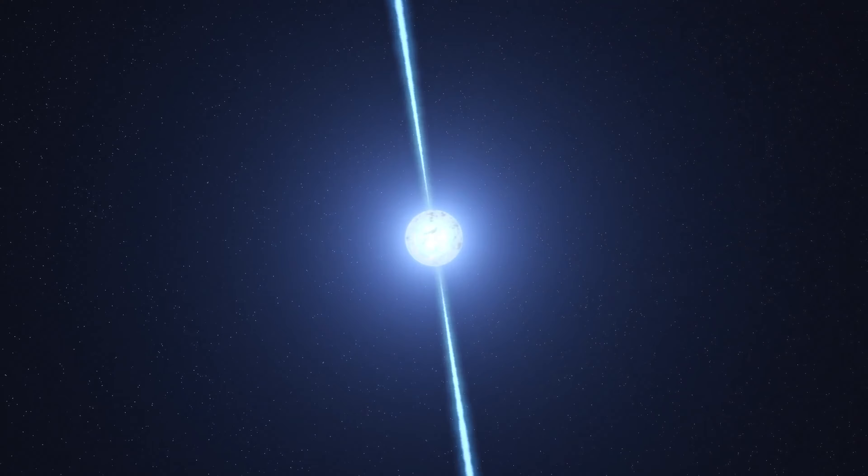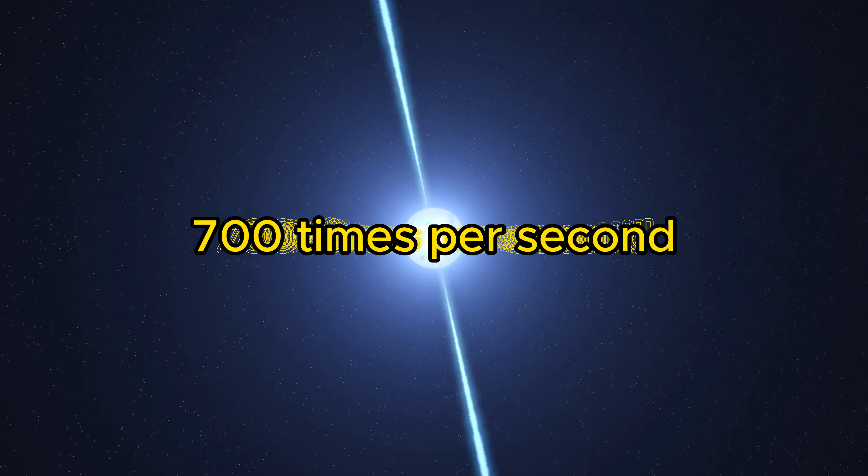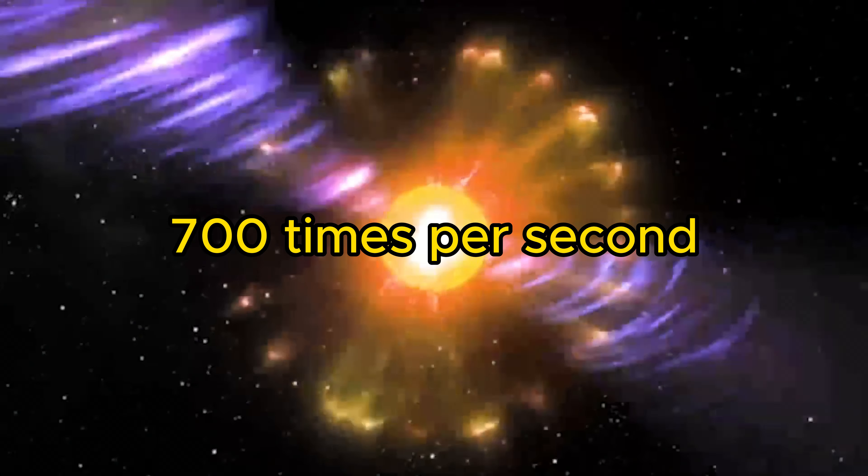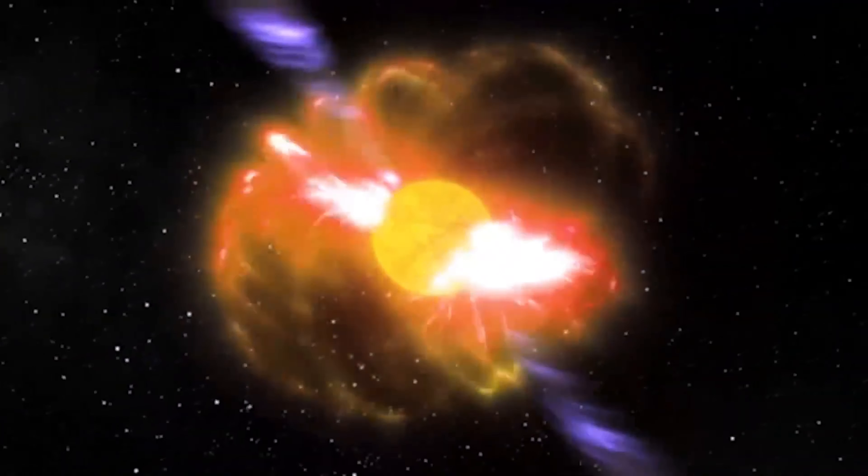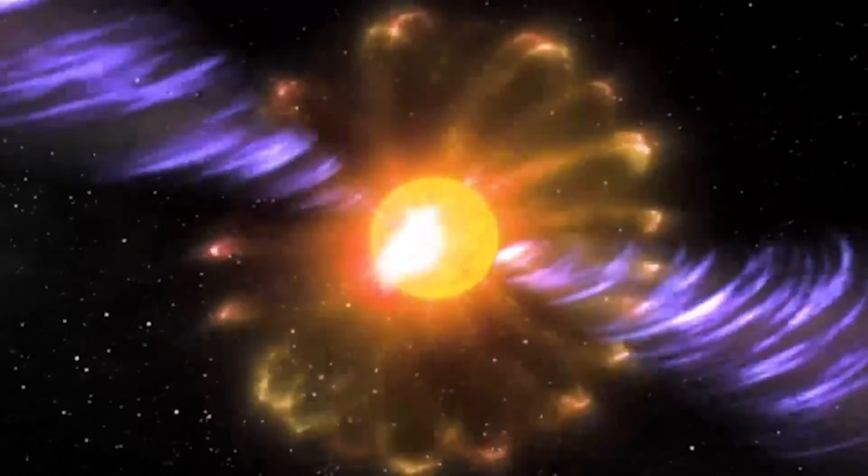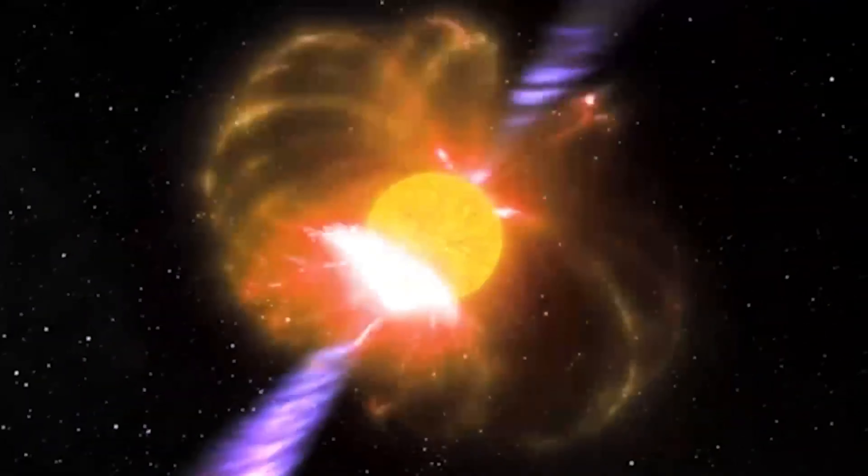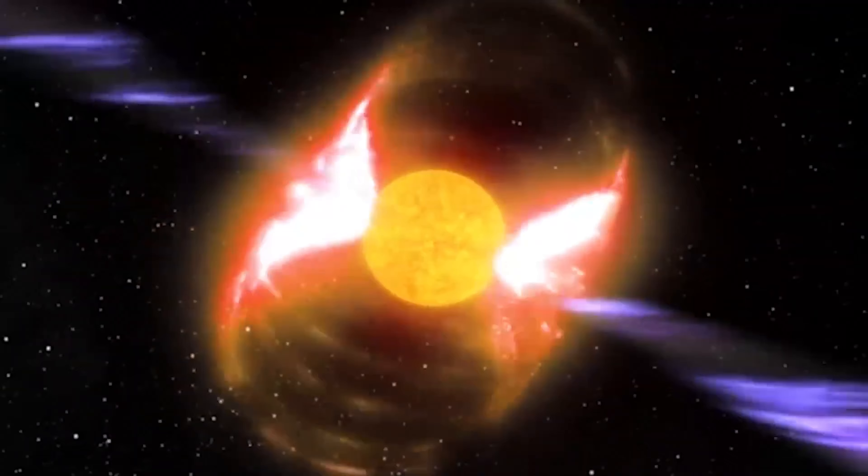This means some newly formed neutron stars can spin as fast as 700 times per second. The collapse of this stellar core has another consequence: the magnetic field lines of the dying star are squashed together, causing the strength of the magnetic field to intensify.